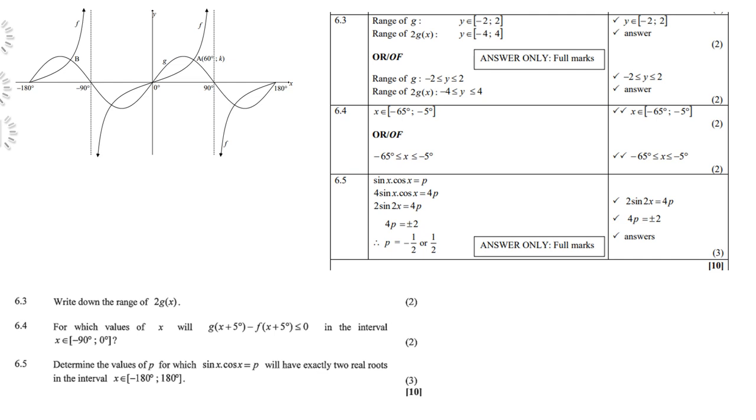Now if you look at 6.4, for which values of x will g(x+45) minus f(x+45) be less than 0. So you must look for the answer between the intervals negative 90 and 0 degrees. Now you must ask yourself, what does x plus 45 mean? It means that the g graph in its x value will move 45 degrees to the right. So both graphs will move 45 degrees to the right. And then if you do that, if you look at the sketch, then the answer should lie between negative 65 and negative 5.